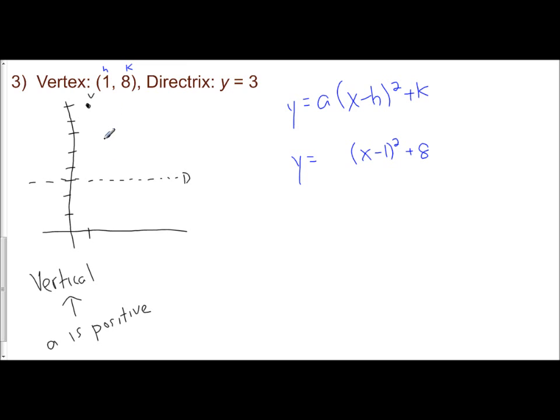Well, the distance from your vertex to your directrix is 1/4a. So I'm at 8. I'm going down to 3. So that's 5 units. So I just solve. 1/4a equals 5. 1 equals 20a. Solve. Divide by 20. a is 1/20. And I just fill that in. And I know it's positive because the graph is opening up. And there is my equation for the parabola.